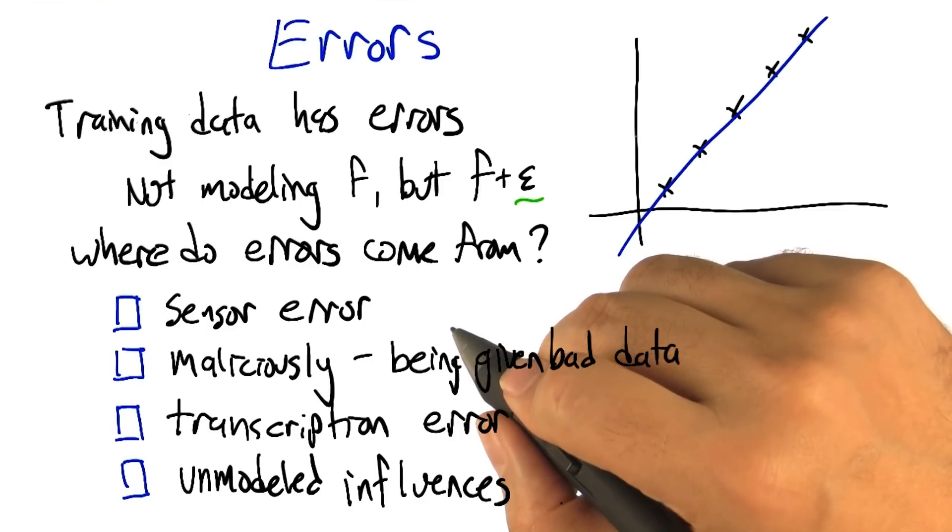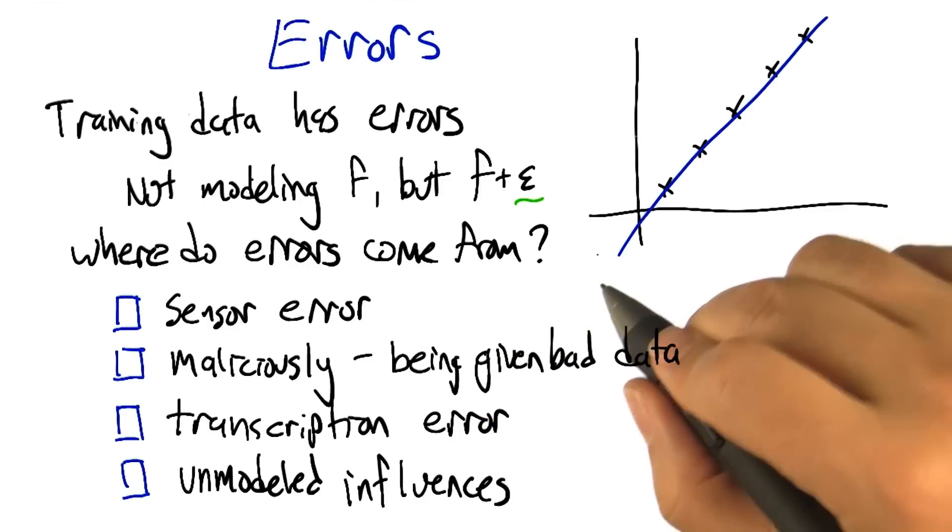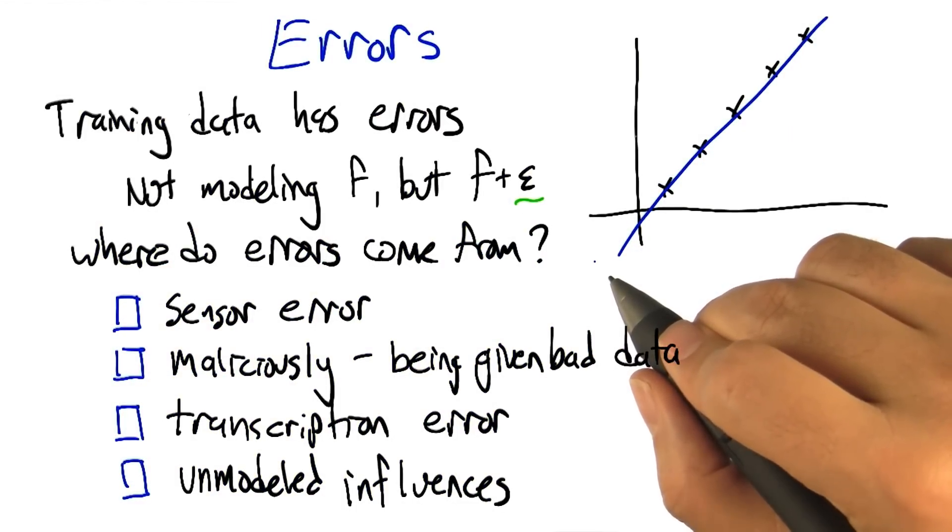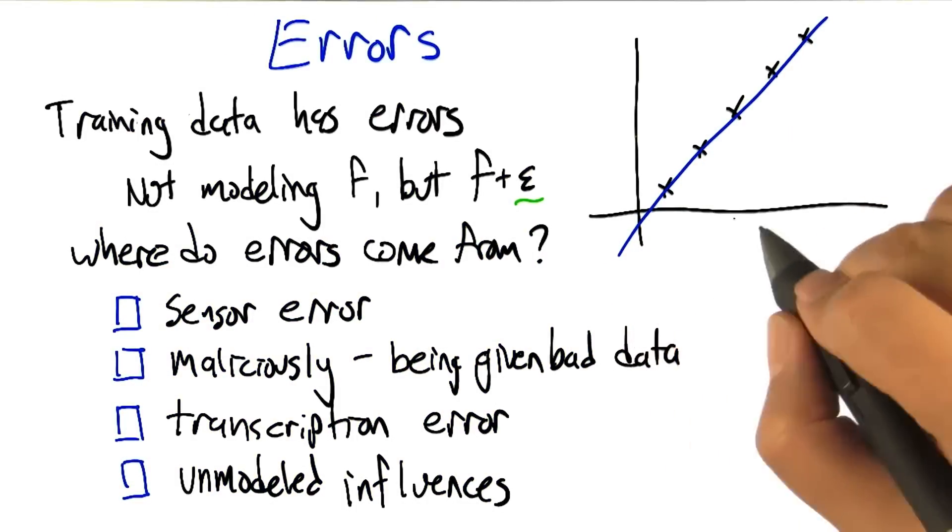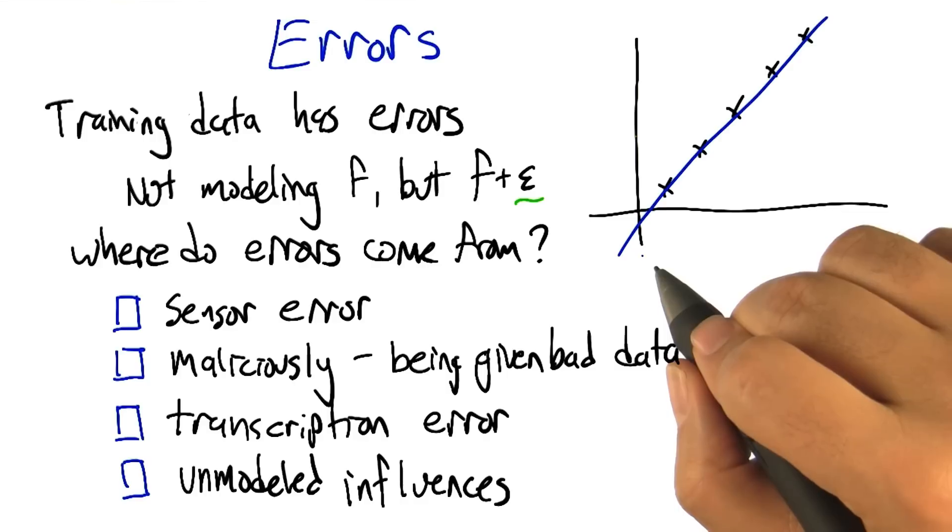So in the housing data, we were just trying to relate the size of the houses to the price. But there's a lot of other things to the price. Location, location. Location and location, right. Those are three really good reasons that are not in the particular regression that we did, that could actually influence the prices.